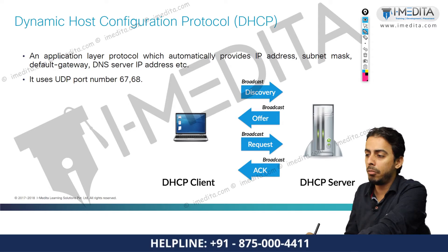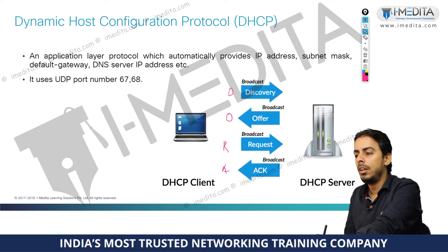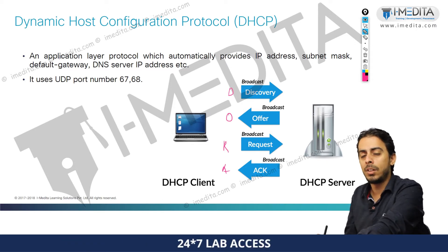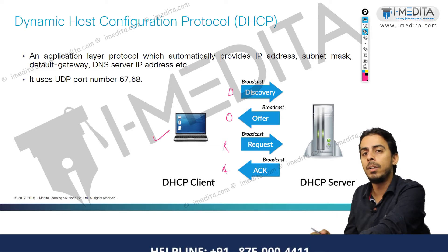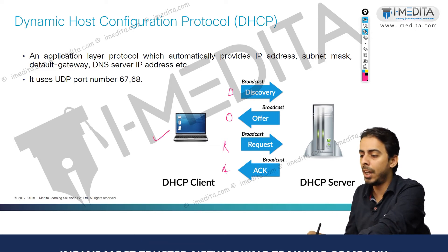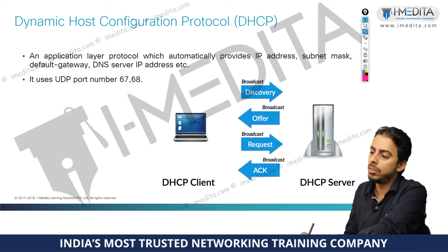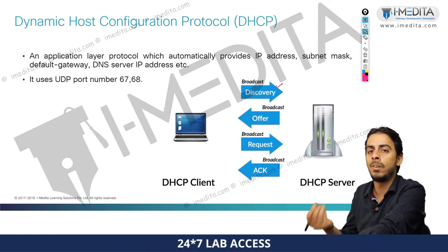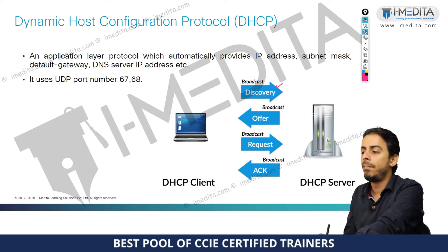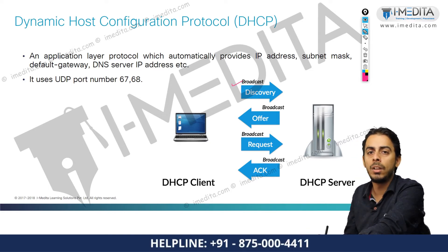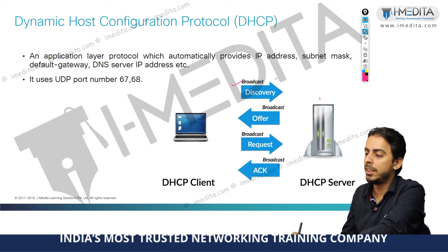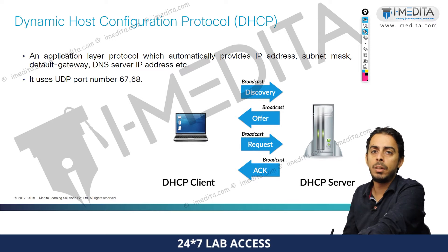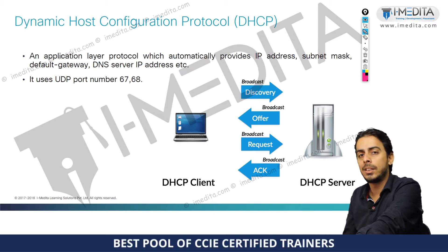DHCP works on a process named the DORA process — Discover, Offer, Request, Acknowledgement. Whenever a client boots up and is set to get an IP address from the DHCP server automatically, the DHCP client sends a DHCP Discover message to discover the presence of the DHCP server in the network. That Discover message is broadcasted to all devices in the LAN, and when received by the DHCP server, it knows that someone is asking for an IP address.